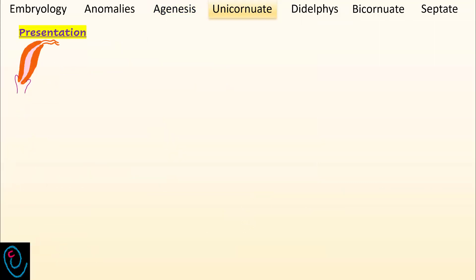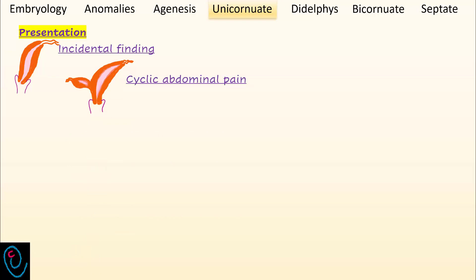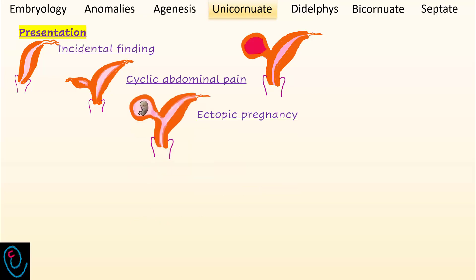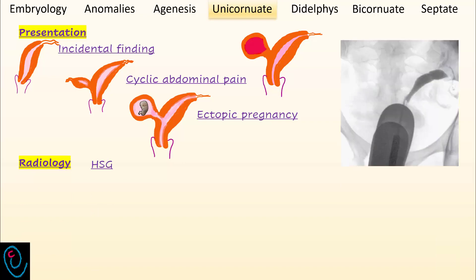A simple unicornuate uterus may be an incidental finding during an infertility workup. A non-communicating rudimentary horn will result in cyclic abdominal pain due to accumulation of blood in the horn. Ectopic pregnancy inside a rudimentary horn may present with life-threatening intraperitoneal hemorrhage due to rupture. Hysterosalpingography usually demonstrates a single laterally deviated uterine canal, or it may reveal two asymmetrical canals. However, a non-communicating horn is missed by hysterosalpingography. 3D ultrasound and MRI add more information, and renal sonography is important because 40% of women have some degree of renal agenesis, usually ipsilateral to the anomalous site.